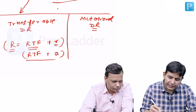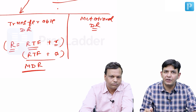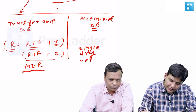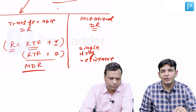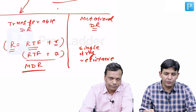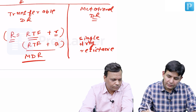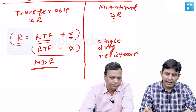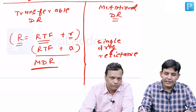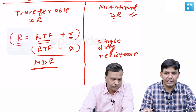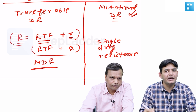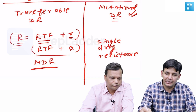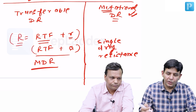Multiple drug resistance can happen through transferable drug resistance, whereas in mutational drug resistance it is mostly single drug resistance. Multiple drug resistance is a phenomenon seen in transferable drug resistance. An important question: in tuberculosis, which method plays a more important role? Most people answer this wrong — it is mutational drug resistance that plays the more important role in Mycobacterium tuberculosis. Transfer drug resistance can occur later, but the major contributor is mutational.